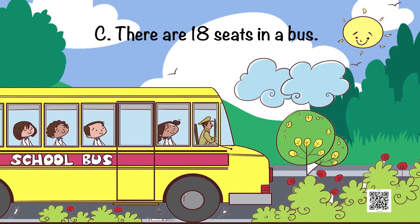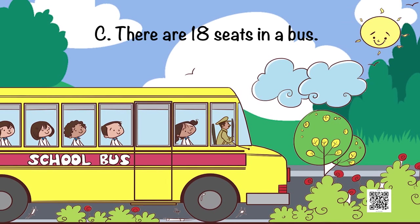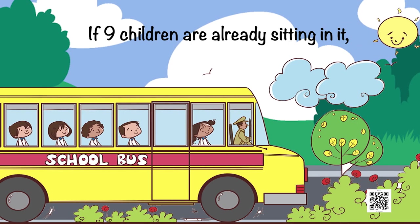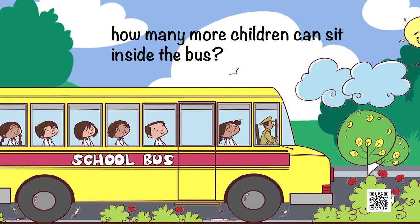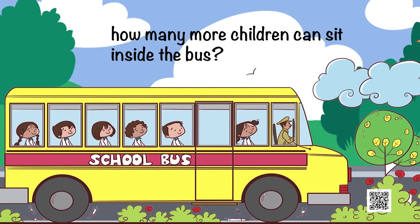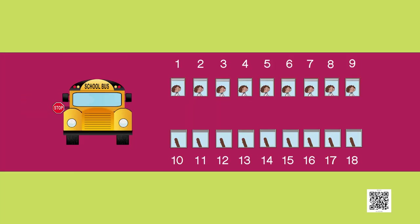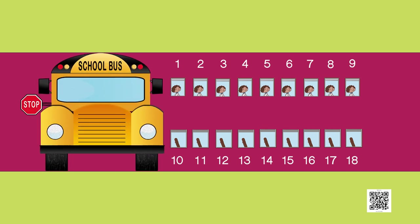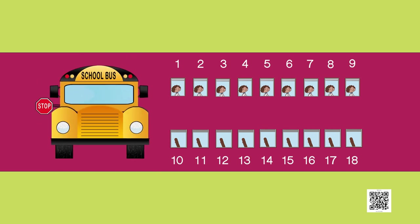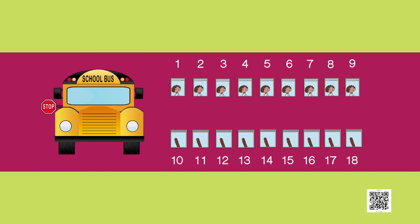Let us look at part C. There are 18 seats in a bus. If 9 children are already sitting in it, how many more children can sit inside the bus? Well, this is quite an interesting situation. Let us try to visualize it. Here in the bus we have 18 seats, and here 9 seats are already filled.